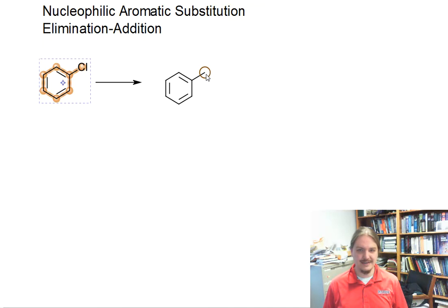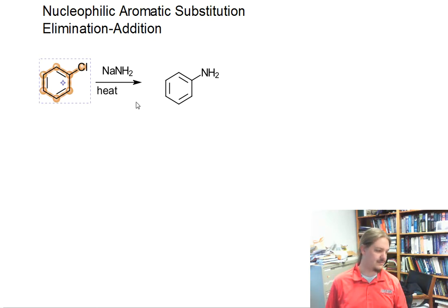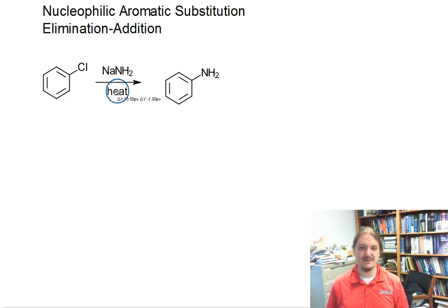And as an example, let's talk about the conversion of chlorobenzene into aniline using sodium amide as a base. This reaction is going to require a fair amount of heat. So even though it's done in liquid ammonia, it's done in a pressure cooker. This reaction requires some heat. It's pretty horrible.